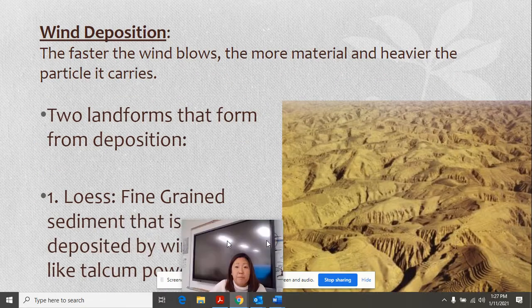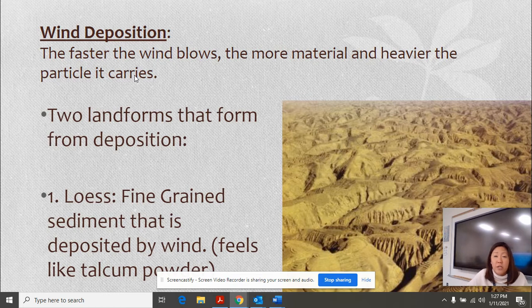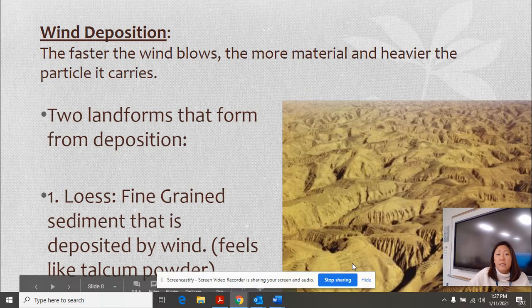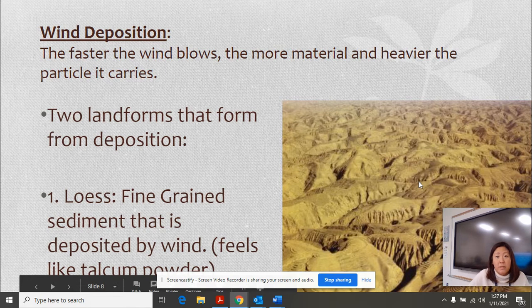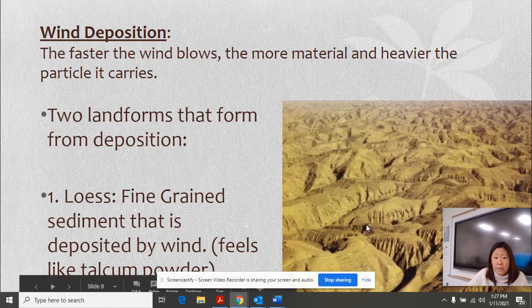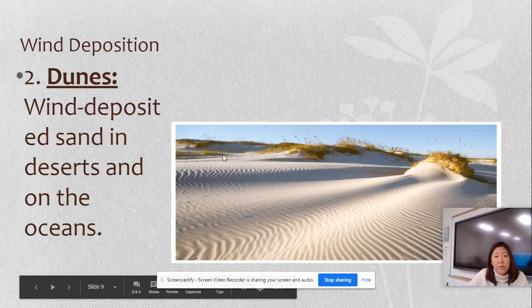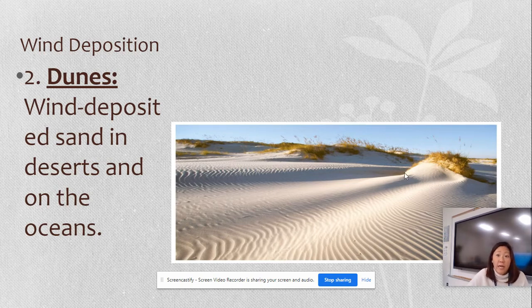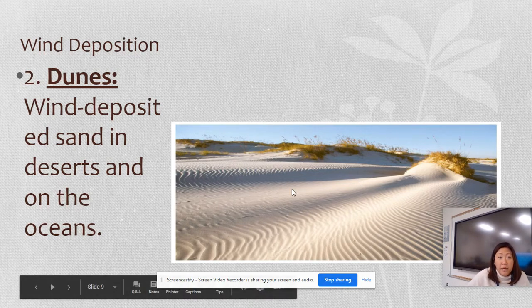Okay, we're going to move on to wind deposition. Wind deposition is simply just the idea of when wind is blowing in the area, at some point it's going to have to settle down. And when it does settle down, it creates something called loess, which is this fine-grained sediment. You can almost think of like baby powder, where it gets deposited by the wind. The other last landform that's created is something called dunes, which you may have seen maybe at the beach, if you've ever gone to the beach, or if you've actually had the pleasure of ever visiting a desert, then you might see these sand dunes that are created by wind deposition.